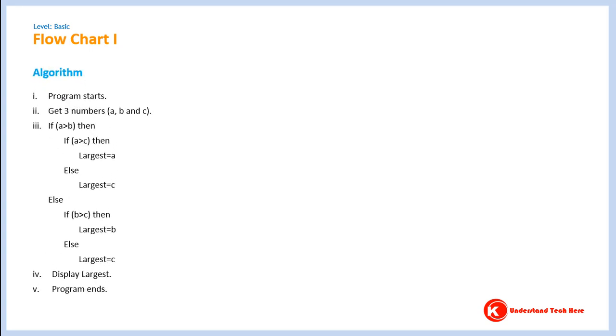This is an algorithm to find the largest among three numbers. A flowchart is a pictorial representation of an algorithm. This is a flowchart of this algorithm.